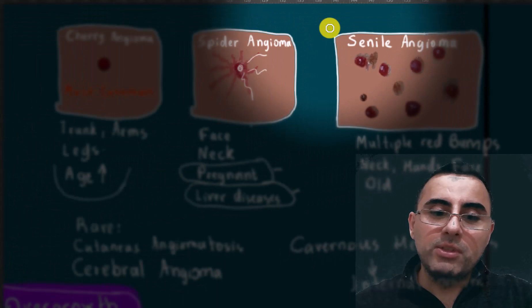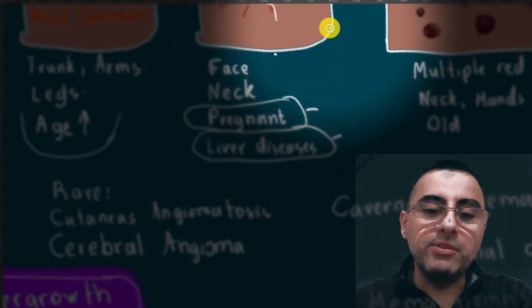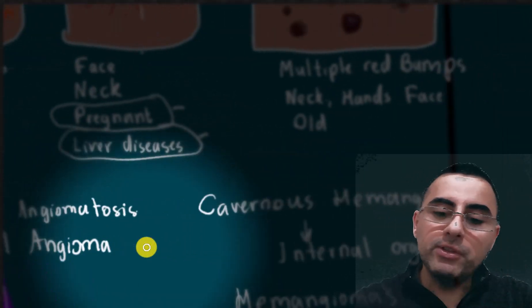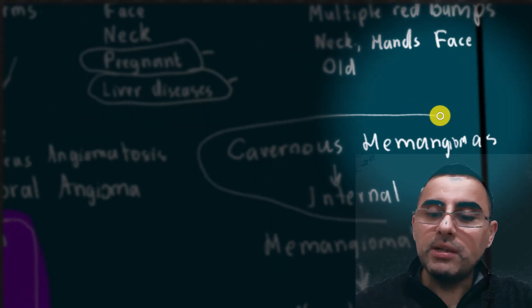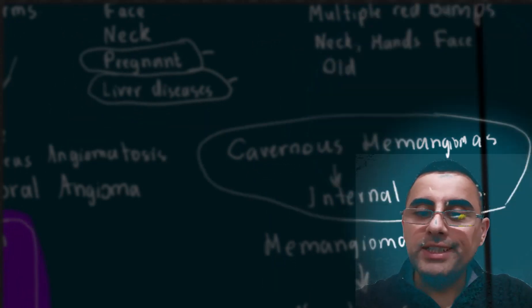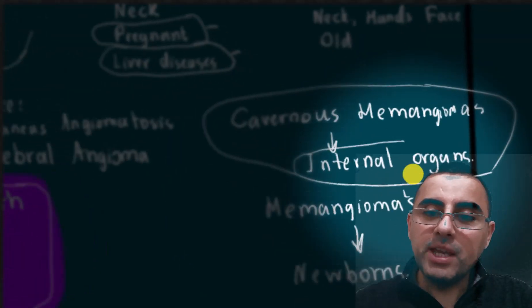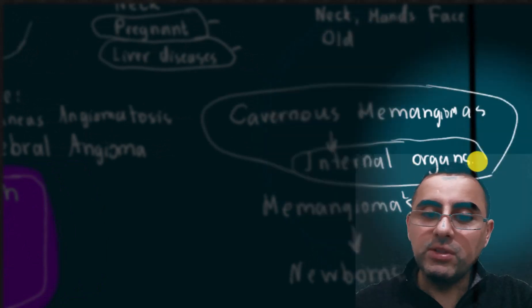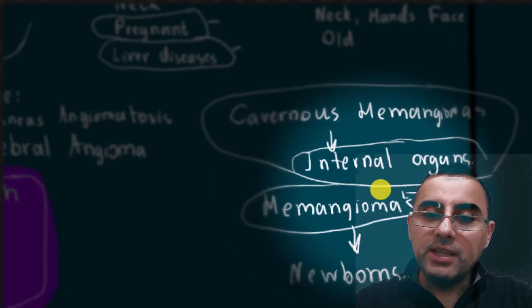Other types of angioma include cutaneous angiomatosis, cerebral angioma, cavernous hemangioma, and hemangiomas. Cavernous hemangiomas usually occur in internal organs and grow slowly over years, sometimes causing problems. Hemangiomas commonly occur among newborns. They can grow fast at first, then slow down or totally disappear over time.